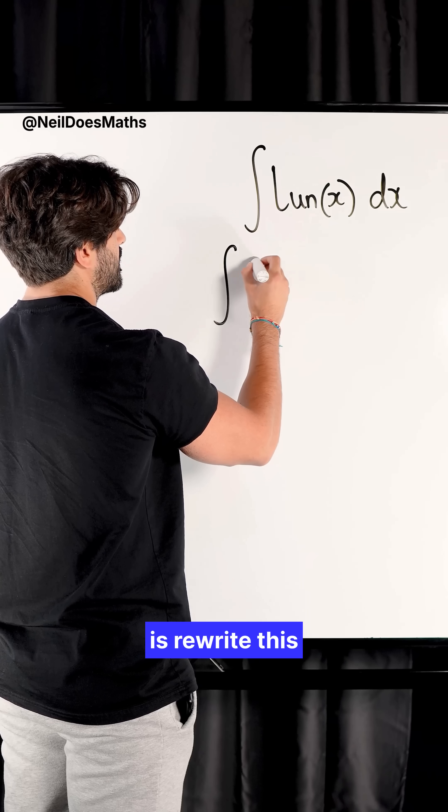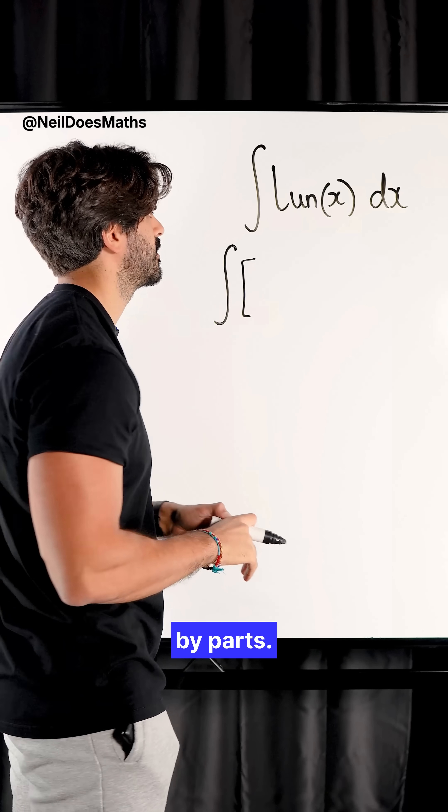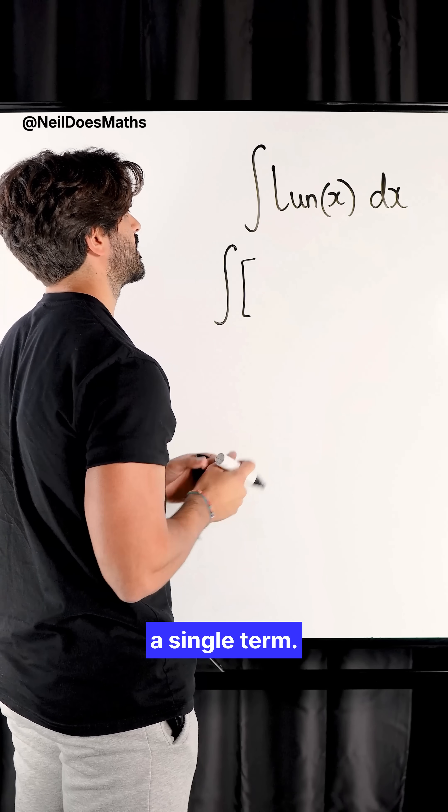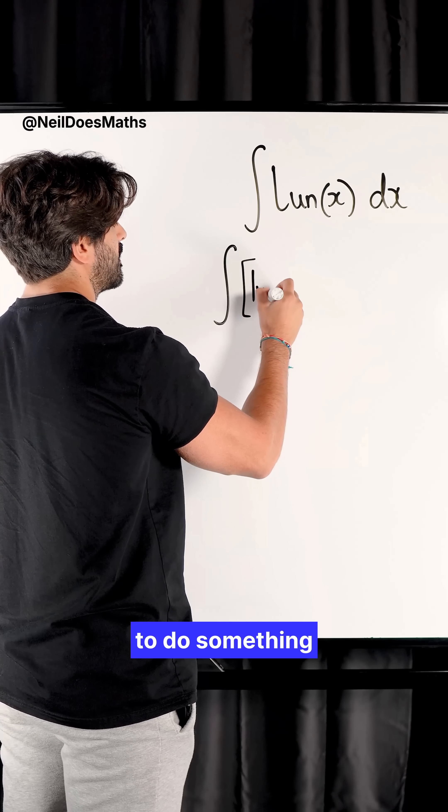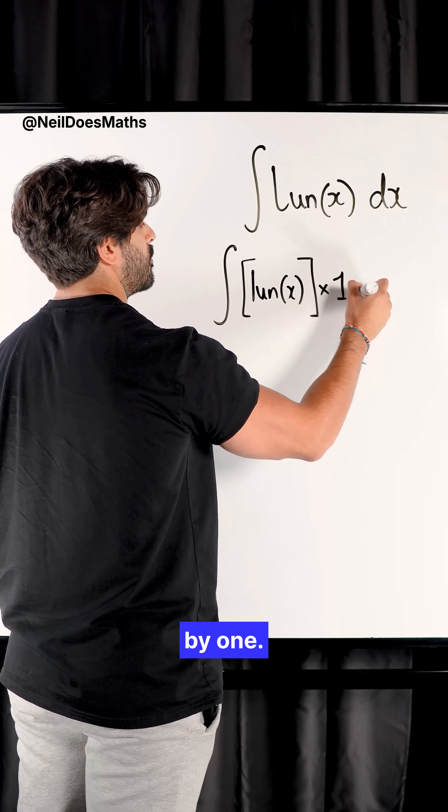All we need to do is rewrite this as a product of two terms to use integration by parts. Now, ln(x) is a single term. So we're going to do something that seems a bit weird, but I'm going to multiply it by one.